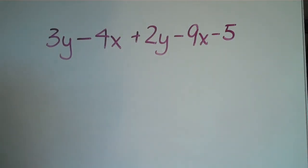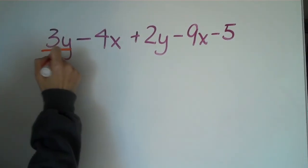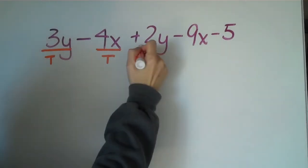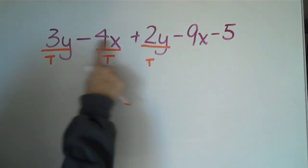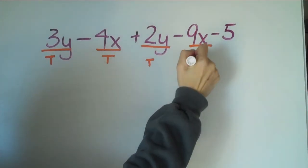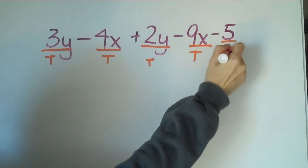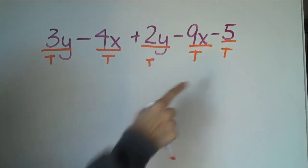We'll talk about first what are our terms. Well, the terms again are anything in between the operations. So here's a term. Here's a term. Here's a term. Notice I'm leaving out anything in between. Here's a term and here's a term. How many terms do we have? Five.